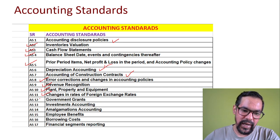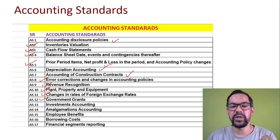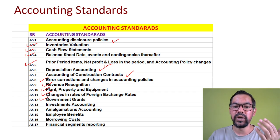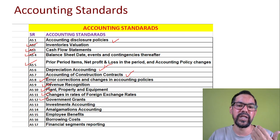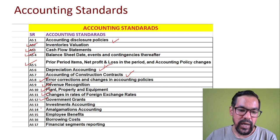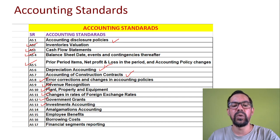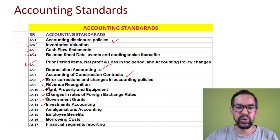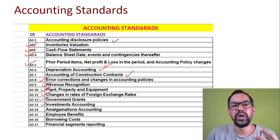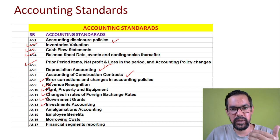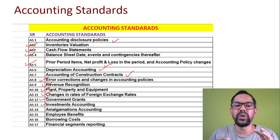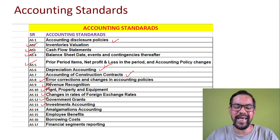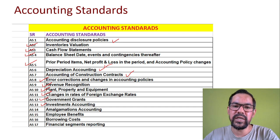Accounting Standard 12 covers Government Grants. Any grant provided by the government — such as subsidies, cash incentives, or duty drawbacks — must be disclosed by entities. Accounting Standard 13 is Investment Accounting. Investments made by companies — through parent organizations or even subsidiaries, whether long-term or short-term — must be disclosed under this accounting standard.